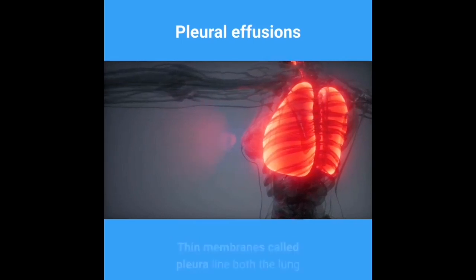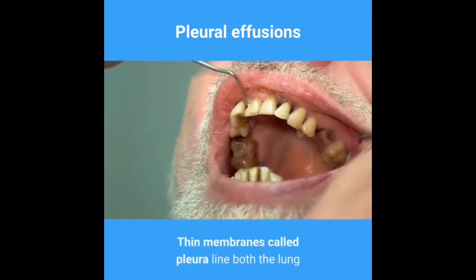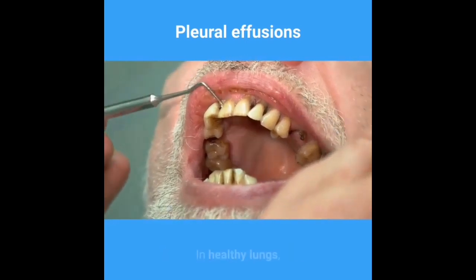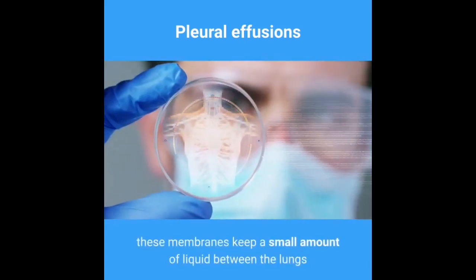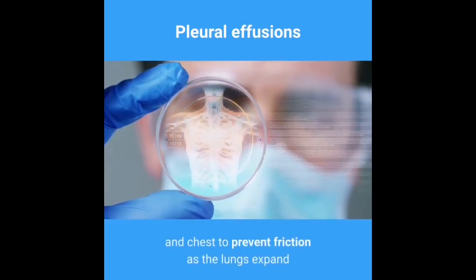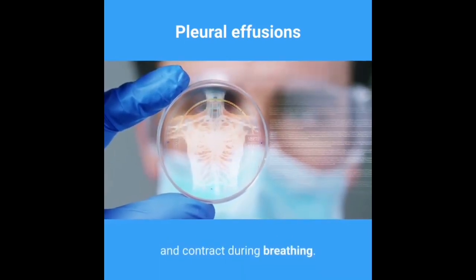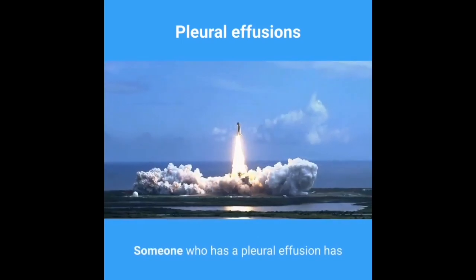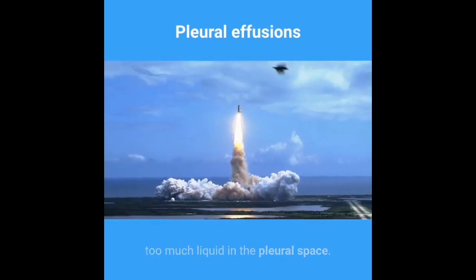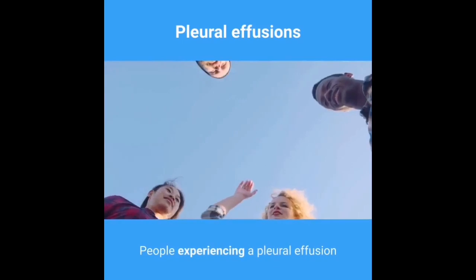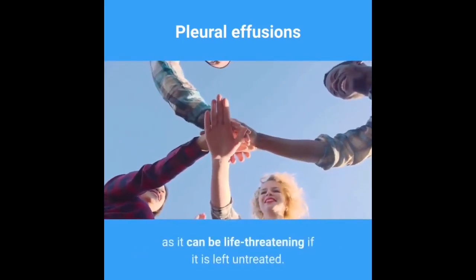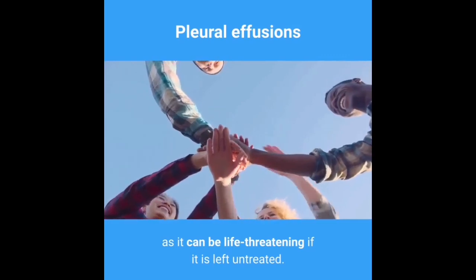Thin membranes called pleura line both the lung and chest cavity. In healthy lungs, these membranes keep a small amount of liquid between the lungs and chest to prevent friction as the lungs expand and contract during breathing. Someone who has a pleural effusion has too much liquid in the pleural space. People experiencing a pleural effusion must seek immediate medical attention, as it can be life-threatening if left untreated.